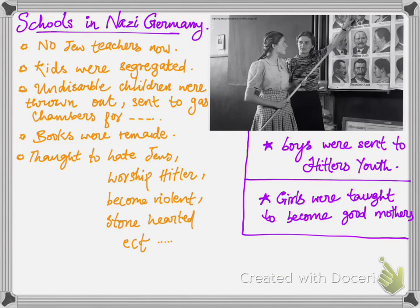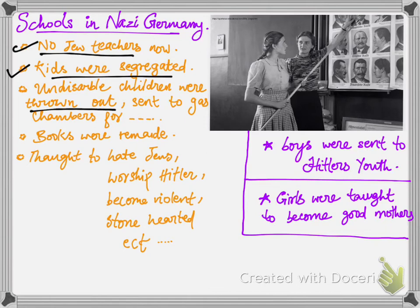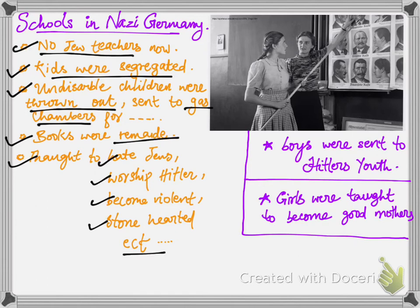In Nazi Germany's schools, there were no more Jewish teachers. Children were segregated — Jews and Germans could not sit or play together. Undesirable children were thrown out of schools and sent to gas chambers for their 'special treatment.' School textbooks were remade to teach children Nazi ideology — to make children violent, stone-hearted, loyal, and submissive, to hate Jews and worship Hitler.